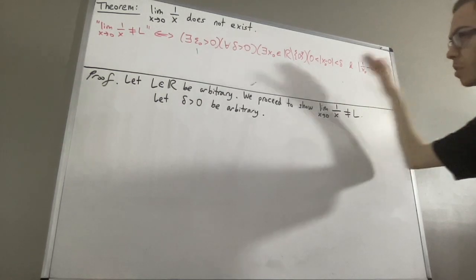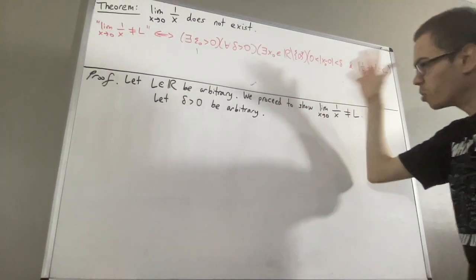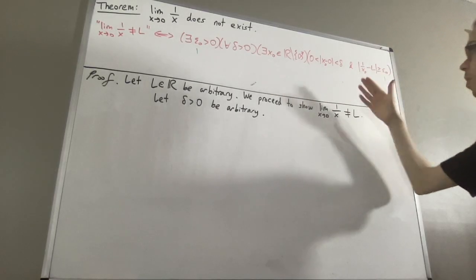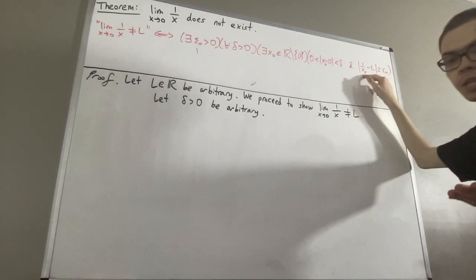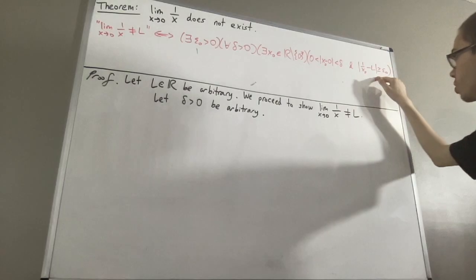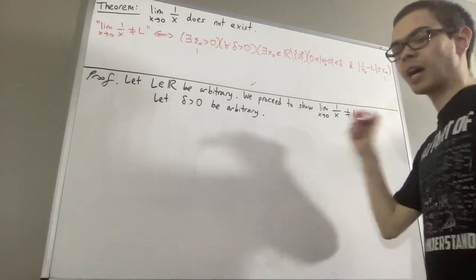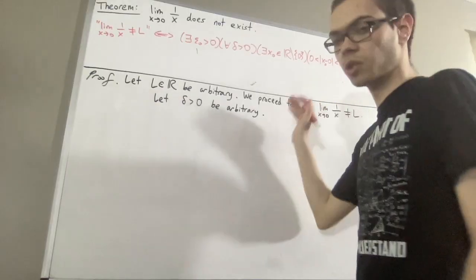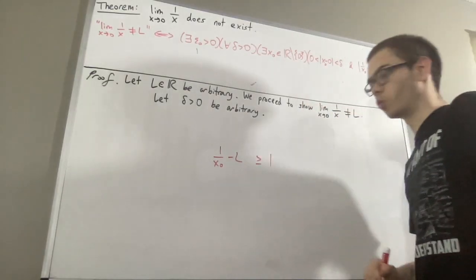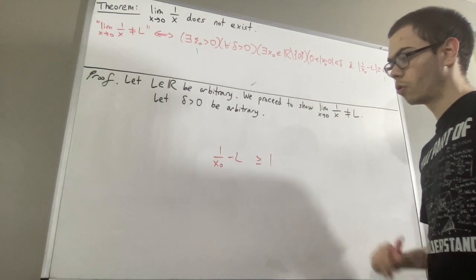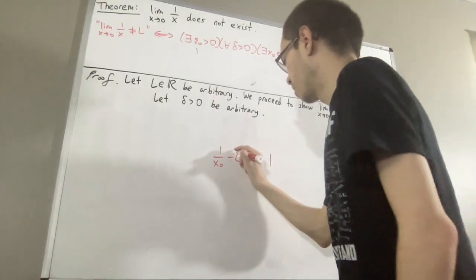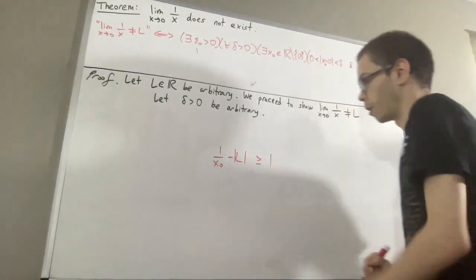As you can imagine, if we choose x naught to be a positive number that is so, so small, we can make it so small that 1 over x naught can be as big as we like. So we can make it so that 1 over x naught will greatly exceed L, and certainly 1 over x naught will exceed L by 1. So how small do we need to make x naught so that 1 over x naught minus L is greater than or equal to 1? It suffices to figure out how small we need to make x naught so that 1 over x naught minus the absolute value of L is greater than or equal to 1.